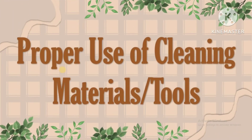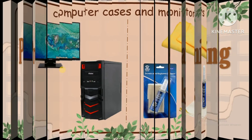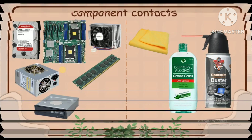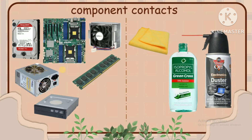Proper use of cleaning materials and tools. Clean computer cases and the outside of monitors with lint-free cloth or soft cloth with a mild cleaning solution or water. To create a cleaning solution, mix one drop of dishwashing liquid with 4 ounces of water. If the internal parts of the computer are dripped with water, make sure it is dry before booting the computer. Clean the contacts on components with isopropyl alcohol. Do not use rubbing alcohol because it contains impurities that can damage contacts. Use compressed air to remove lint from the cloth or cotton on the component before reinstallation.